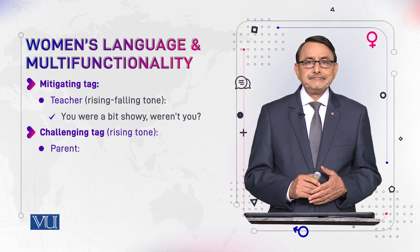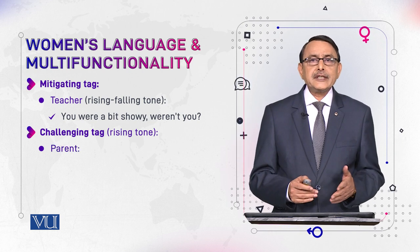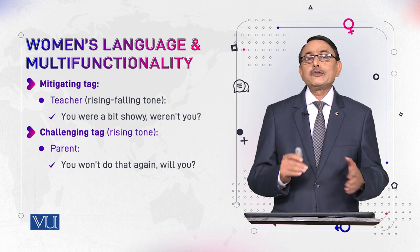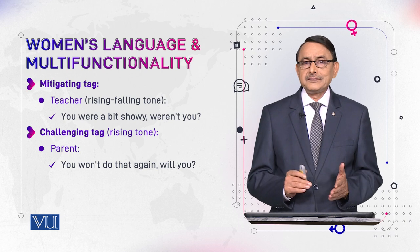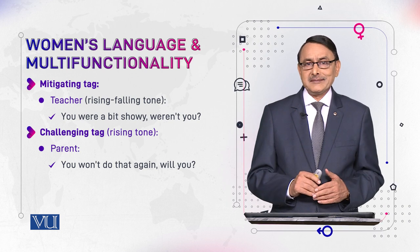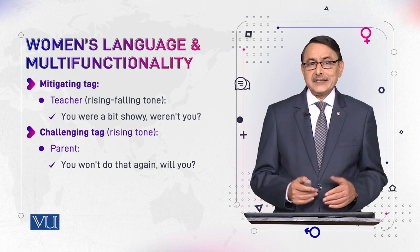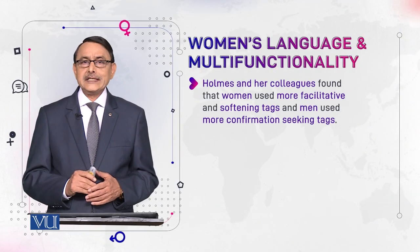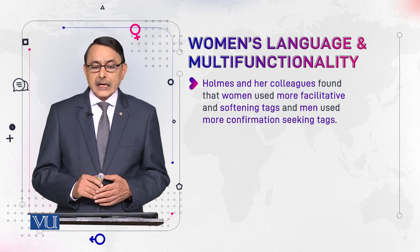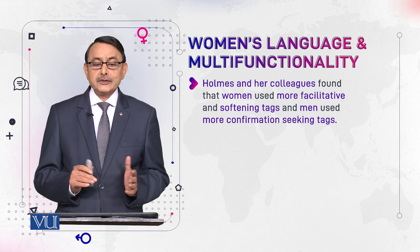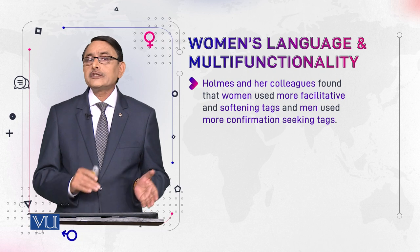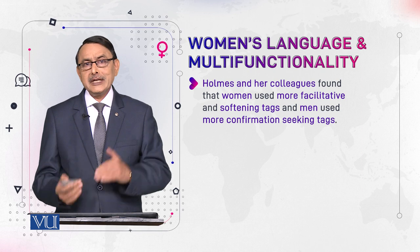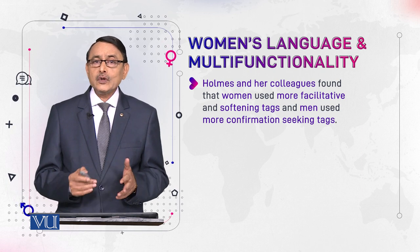The third function of tags is challenging, done with a rising tone. For example, a parent says, 'You won't do that again, will you?' — this is a kind of warning or challenge. Holmes and her colleagues found in their research that women used more facilitative and softening tags than men, while men used more confirmatory tags.